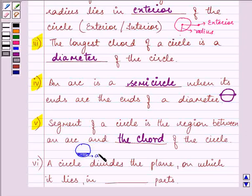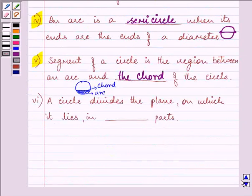this is an arc and this is the chord. So the segment is the region between the arc and the chord of a circle. And last but not the least,